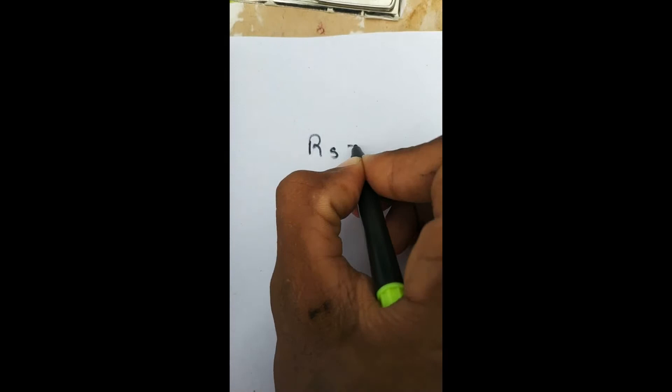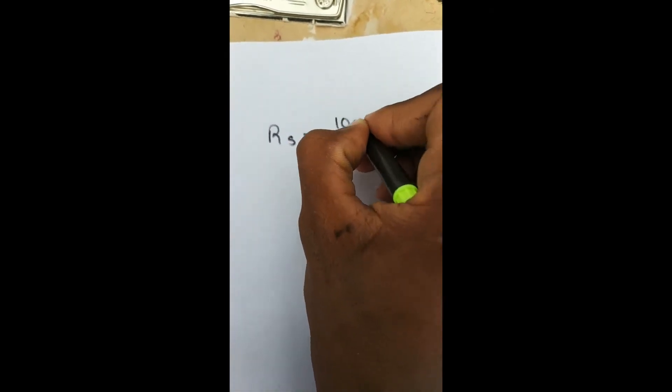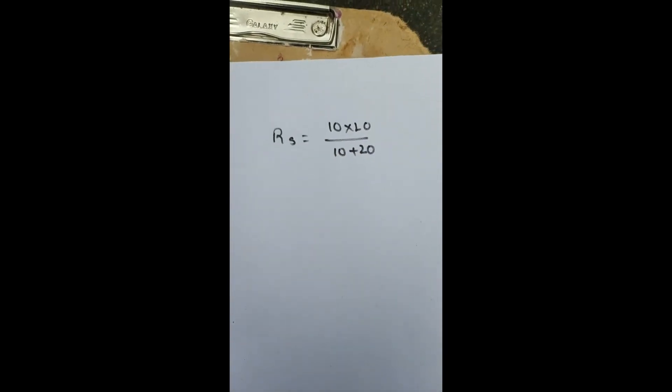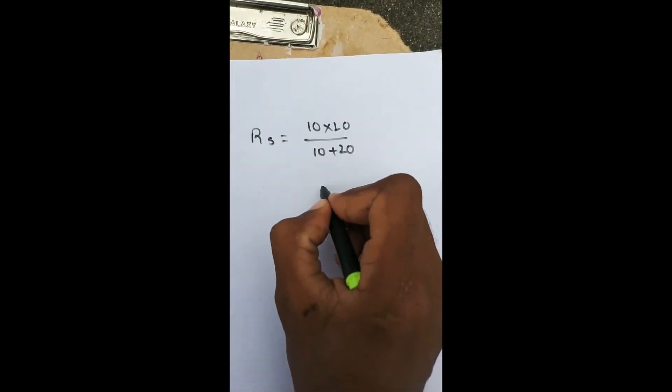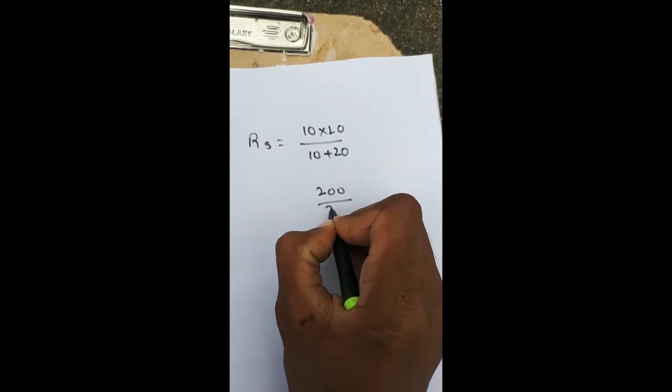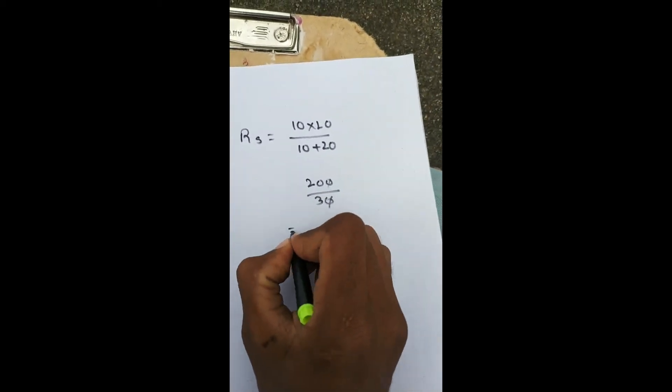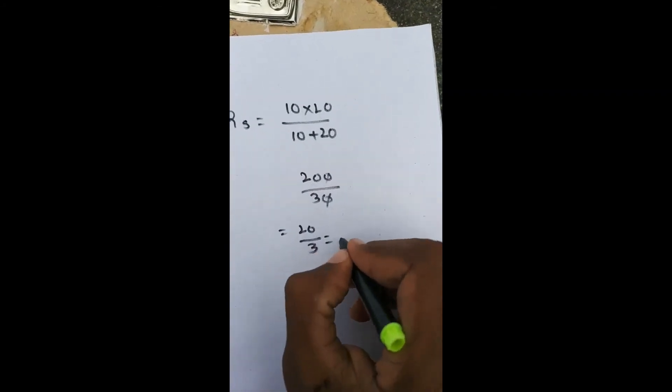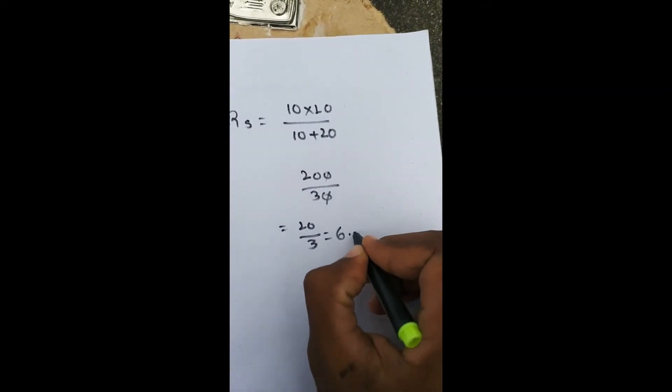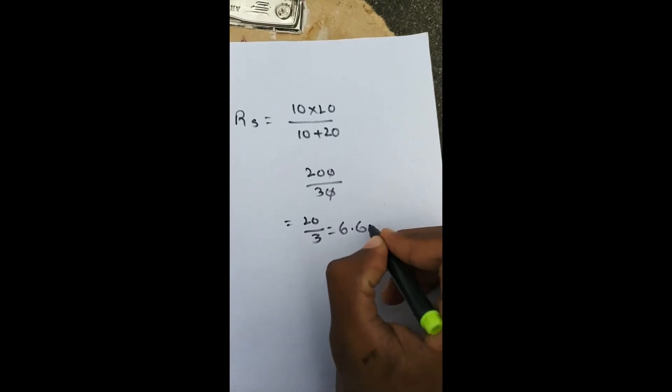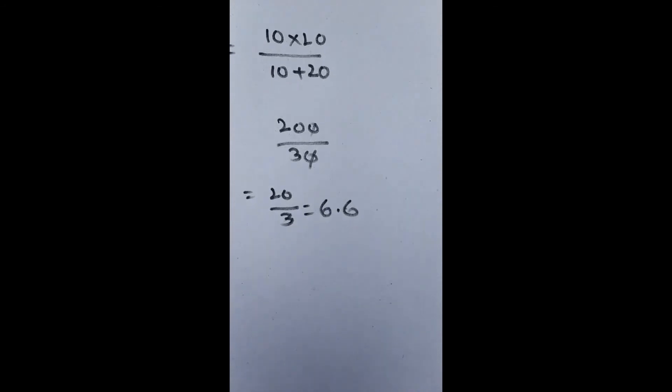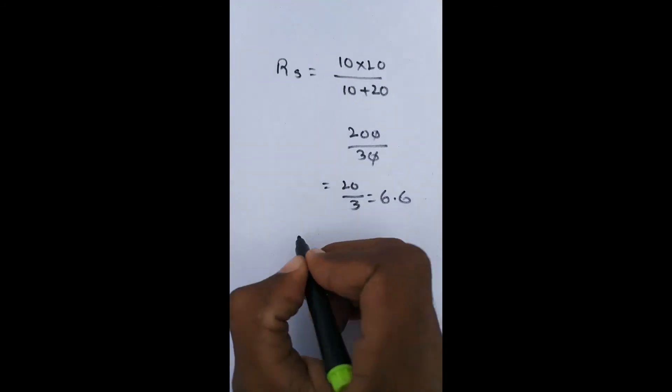Rs is equal to 10 into 20 by 10 plus 20. That means 200 by 30, that is 20 by 3. 6 times 3 is 18, so Rs equals 6.6 ohms. This is the Rs value.